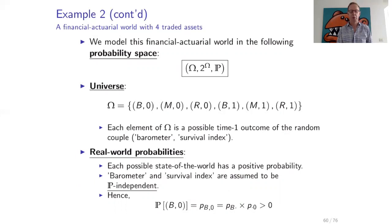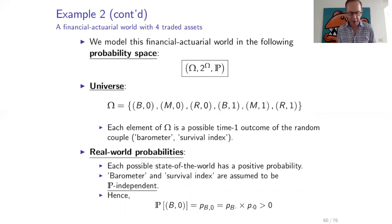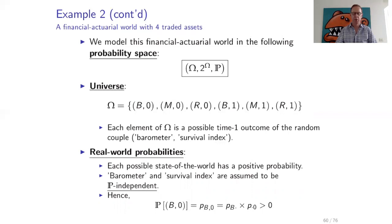This financial actuarial world will be modeled in a probability space. Omega gives us all states of the world at the end of the year, consisting of six couples where the first component is the state of the economy — booming, recession, or moderate growth — and the second component is the value of the survival index, which can be zero or one. There are real-world probabilities for any possible outcome, and we assume that each possible state of the world has a strictly positive probability.